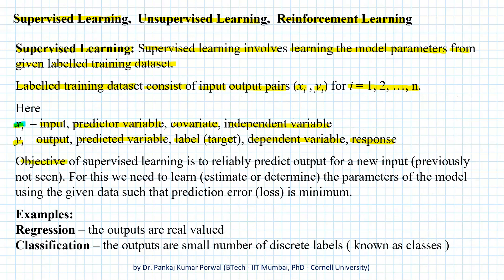The objective of supervised learning is to reliably predict output for a new input which has not been previously seen. For this, we need to learn or estimate or determine the parameters of the model using the given data such that the prediction error or the loss is minimum. Some examples of supervised learning methods are regression and classification.